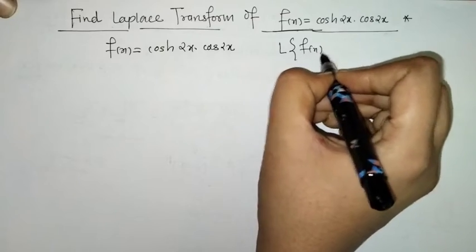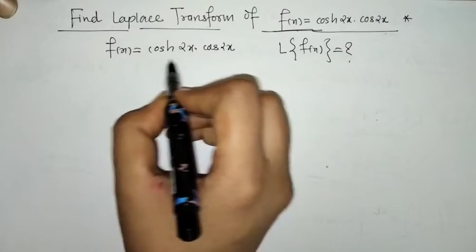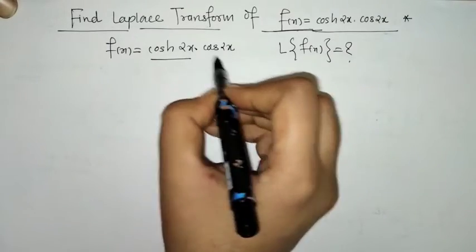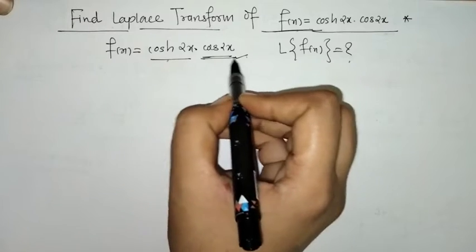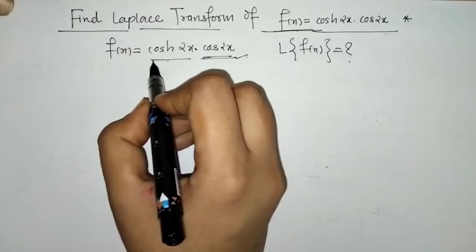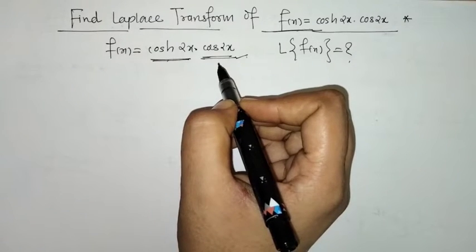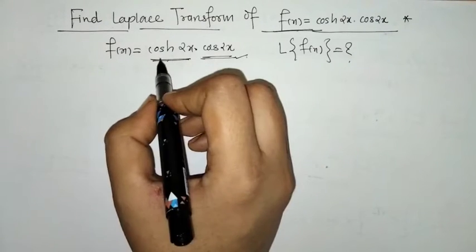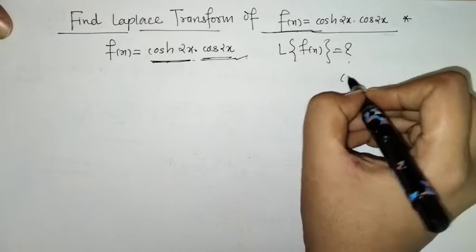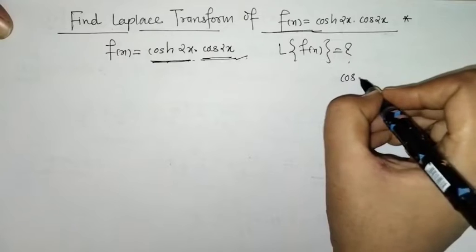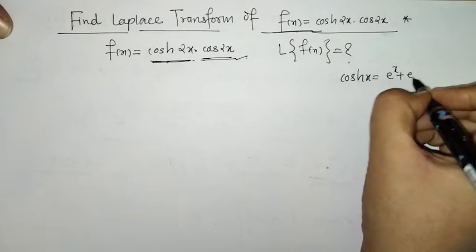We have to find its Laplace transform. Here we have a multiplication of a hyperbolic and a trigonometric cosine. What we have to do is write down this product of two functions in terms of addition and subtraction. Since we have a hyperbolic function, we recall that cosh(x) equals e^x plus e^(-x) divided by 2.